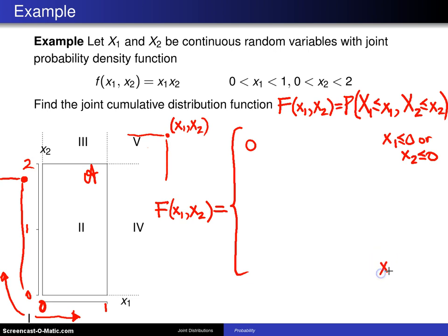Well in that case, we know that x1 is greater than or equal to one and x2 is greater than or equal to two. And in that particular case, any point that you choose out here in region five, if you look at the volume underneath the probability density function to the southwest of that point, you know you're going to pick up all of the support and the area under any probability density function is always going to be one.